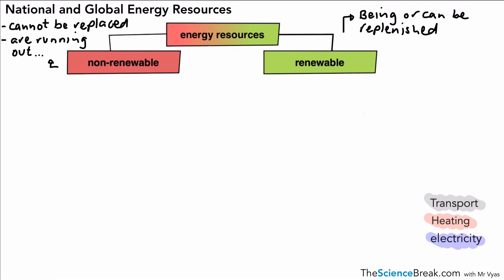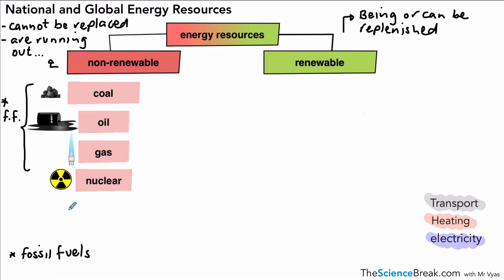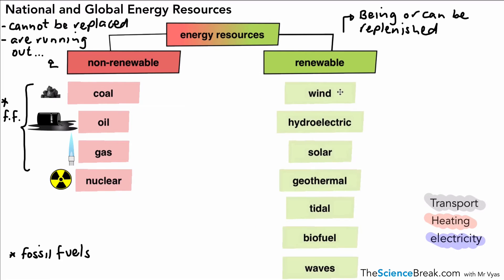For our non-renewable energy resources these are coal, oil, gas and nuclear. The first three — coal, oil and gas — we refer to these as the fossil fuels. Coal, oil, gas and nuclear are the non-renewable energy resources. In terms of our renewable energy resources there are seven that we need to know.